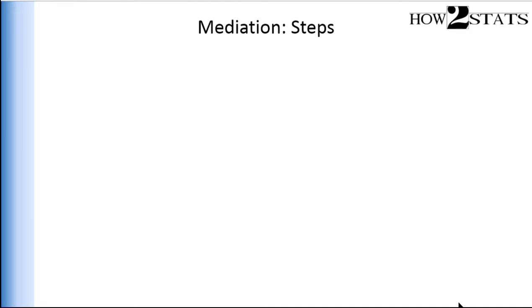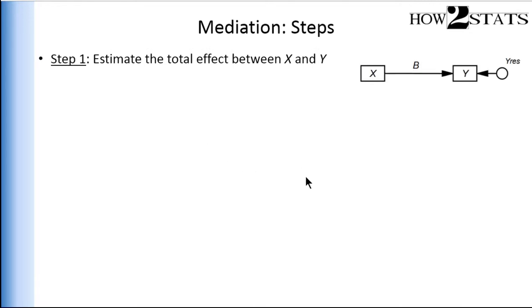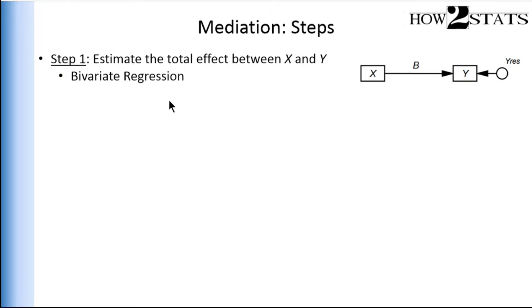Step one: estimate the total effect between x and y — the independent variable and the dependent variable. I'll ultimately compare this total effect with the direct effect estimated in the mediation model. This is not the mediation model; it's just the total effect, estimated easily with a bivariate regression. Step two: estimate the direct effect between x and m — the independent variable and the mediator.